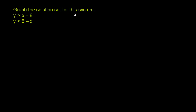Graph the solution set for this system of inequalities. We have y is greater than x minus 8, and y is less than 5 minus x. Let's graph the solution set for each of these inequalities, and then where they overlap is the solution set for the system — the set of coordinates that satisfy both.